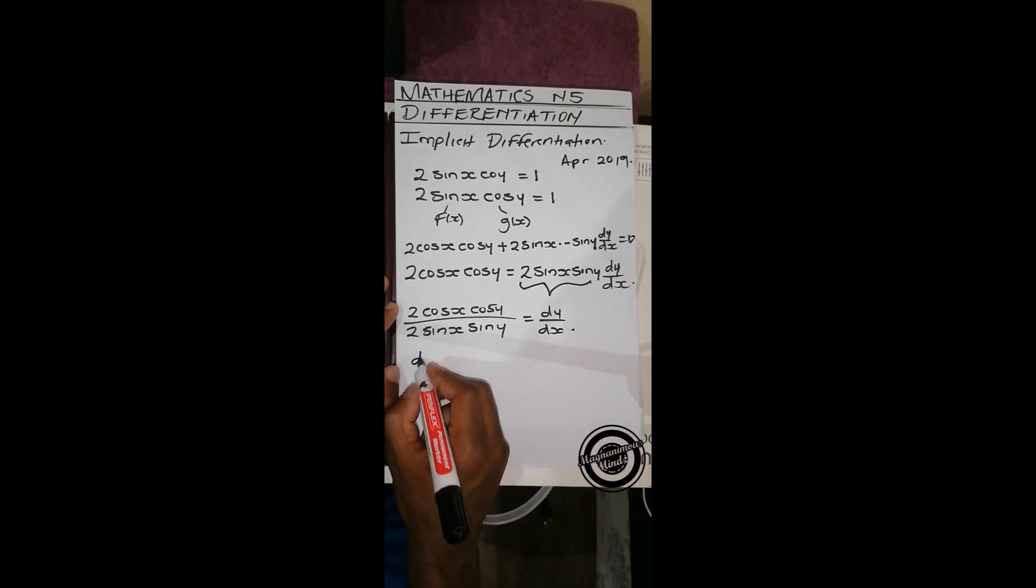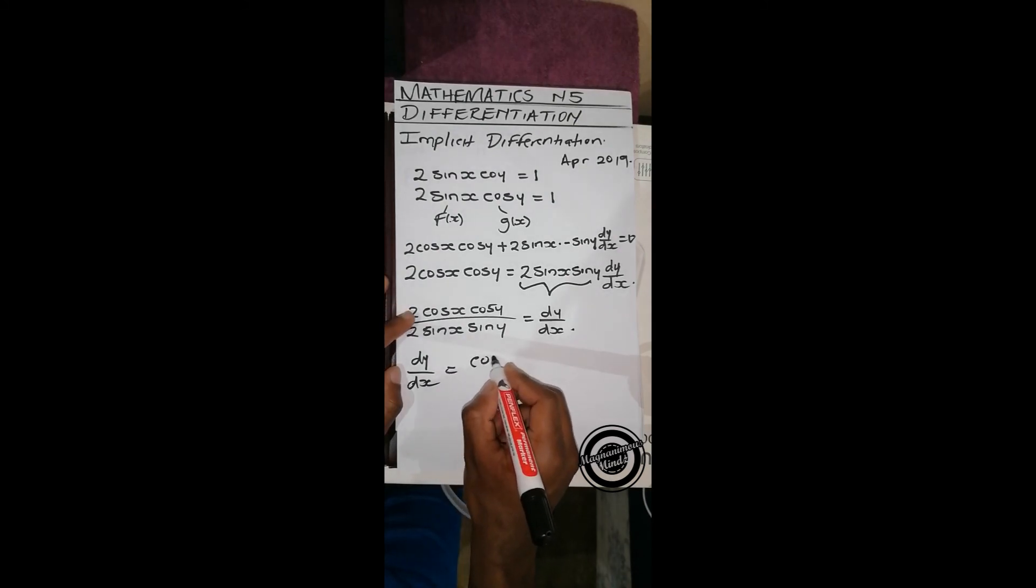So dy/dx equals cos x cos y over sin x sin y. That's it for this question.